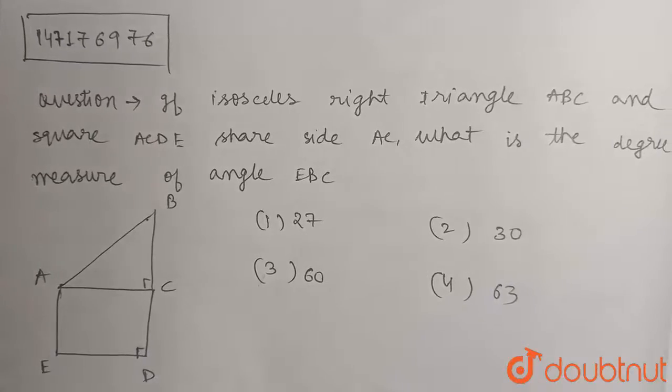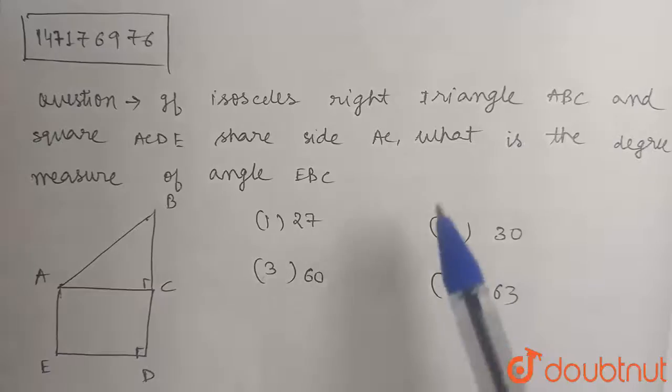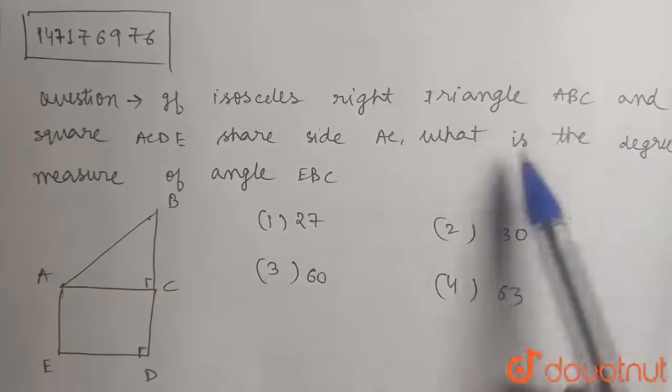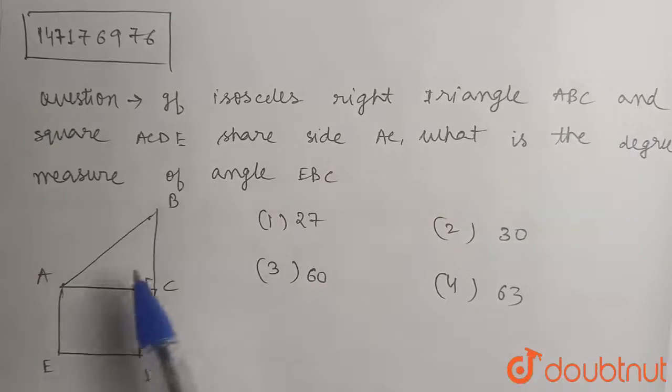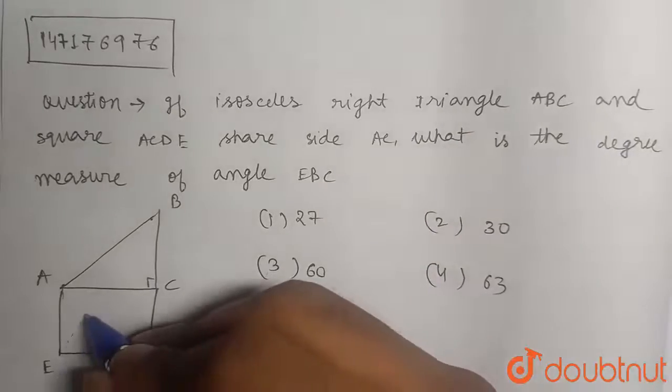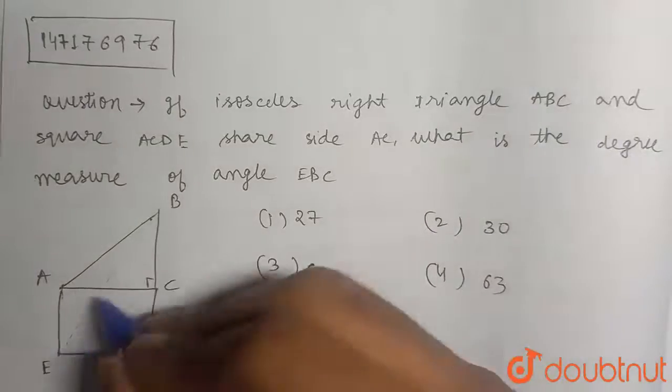The question is: if isosceles right triangle ABC and square ACDE share side AC, what is the degree measure of angle EBC? So basically you need to find out angle EBC.